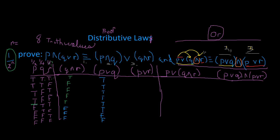Now we have P or R. We need to know that if P is true or R is true, then the statement is true. Following the same pattern: true, false, true, true, true, false, true, false. That's our P or R column — eight values total. You can check you did it right by counting eight rows.